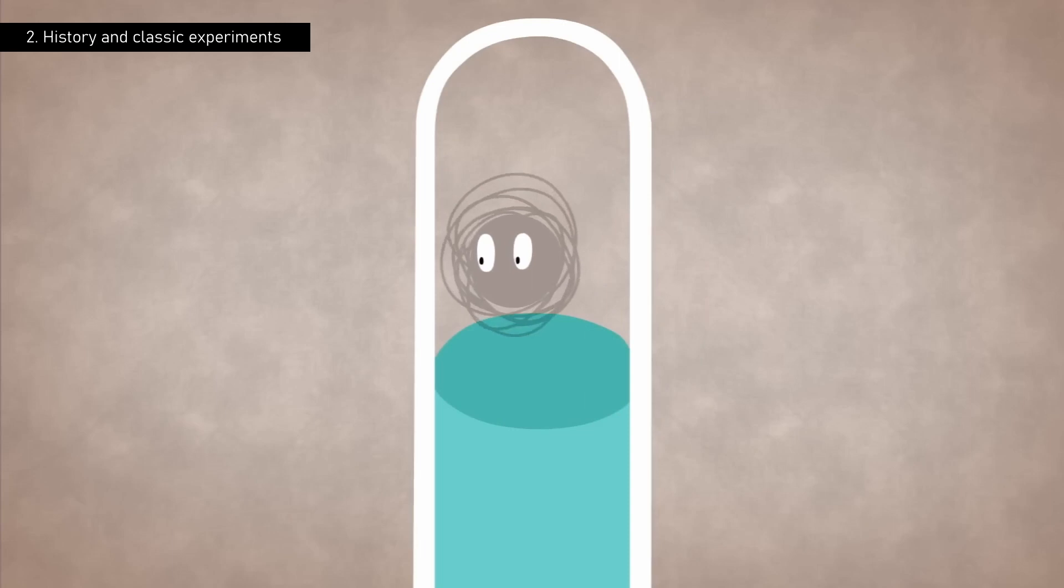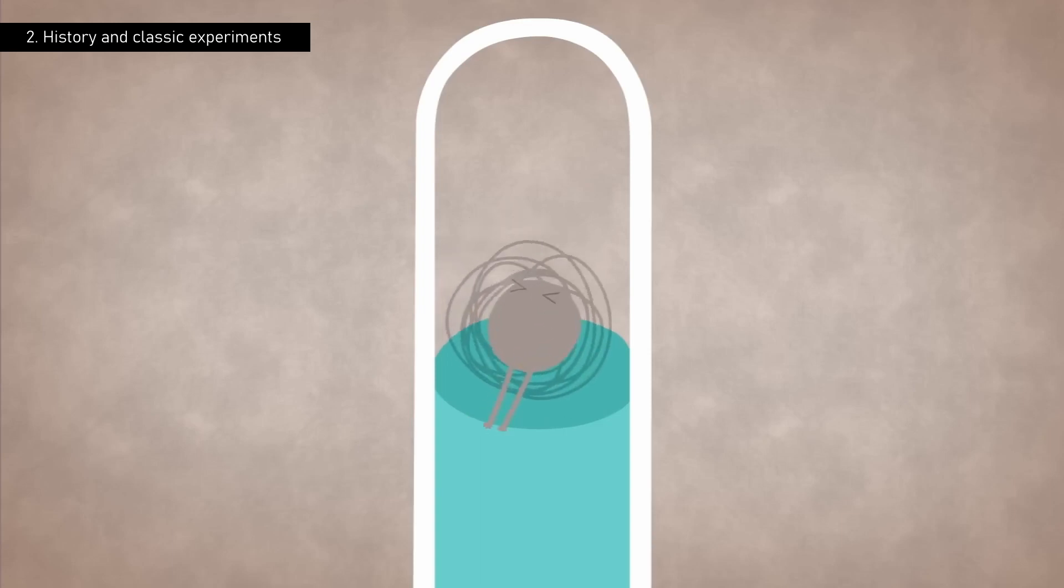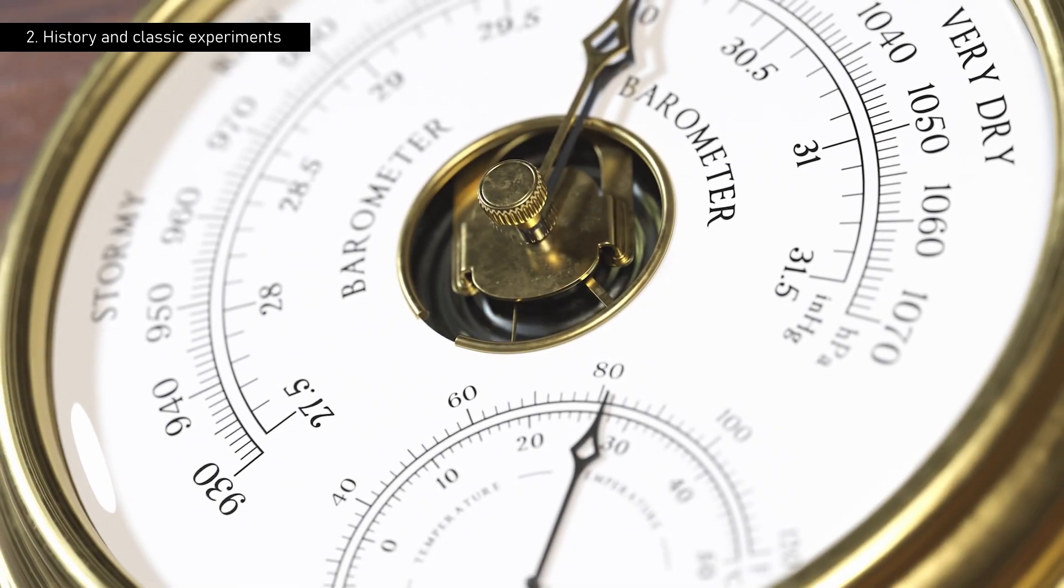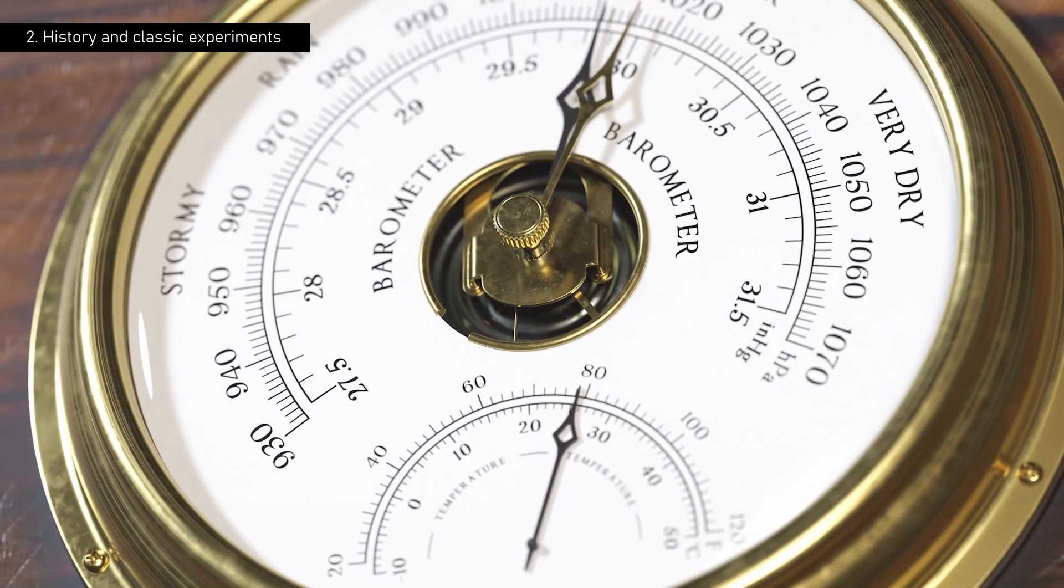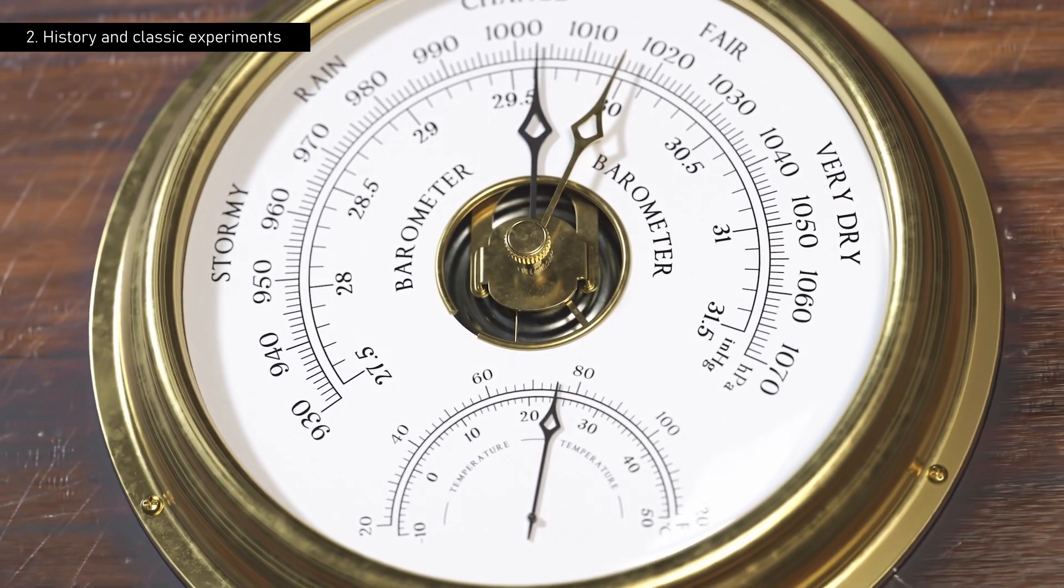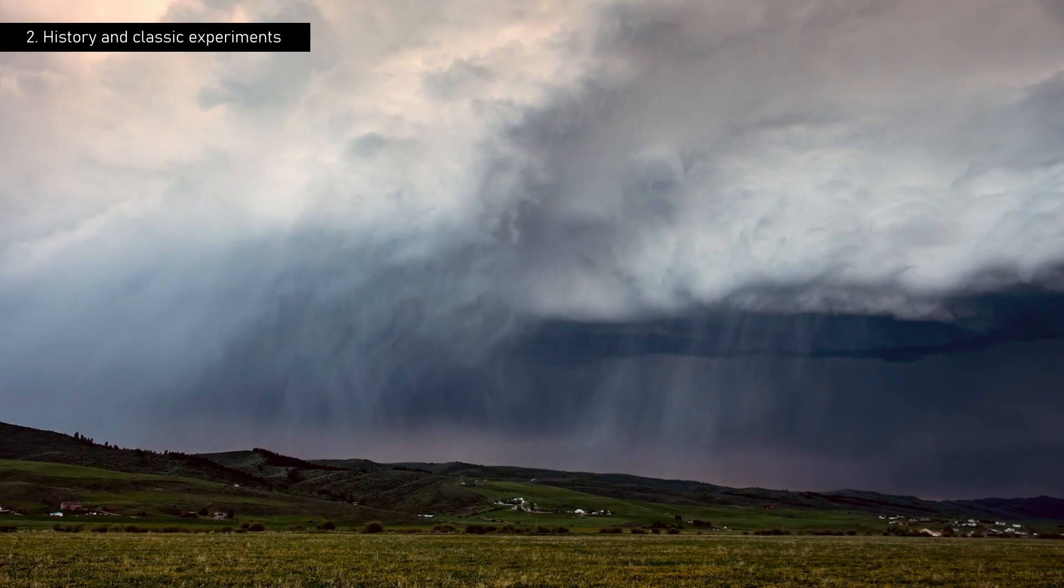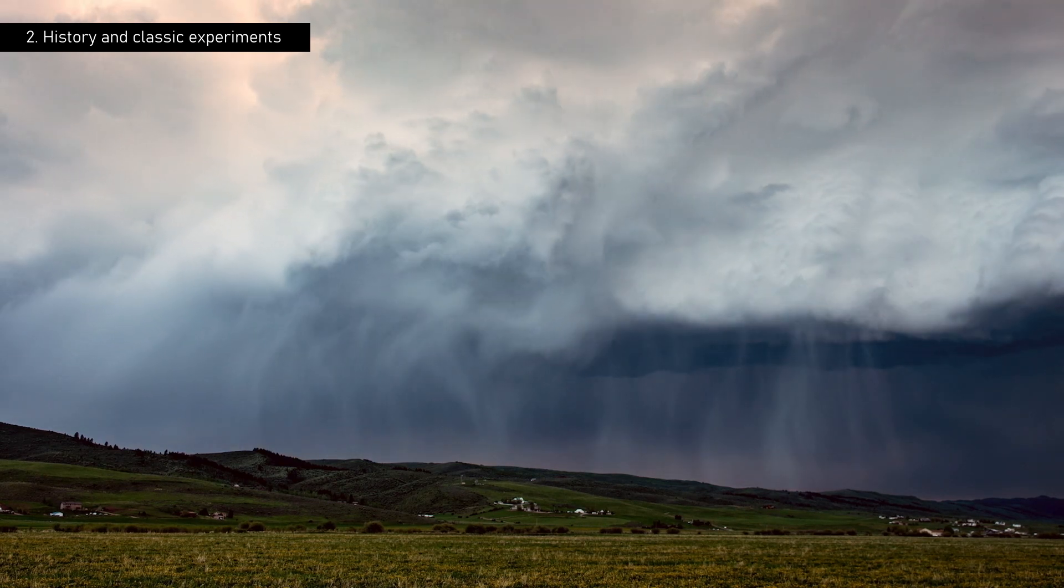Unbeknownst to him, Berti had created the first functional barometer in history. This ingenious experiment not only managed to measure atmospheric pressure, but also opened new avenues of research in physics. Berti had demonstrated that air has weight and exerts pressure, a concept that would revolutionize our understanding of the atmosphere and lay the groundwork for future advances in meteorology and other sciences.